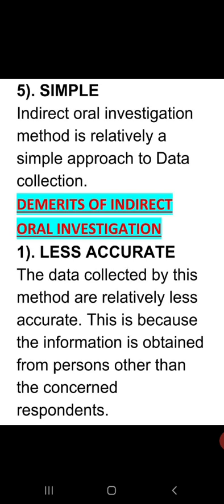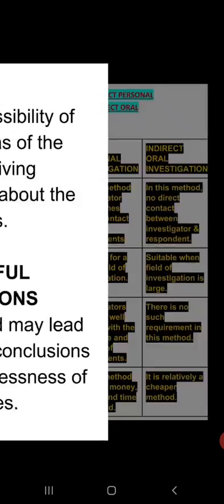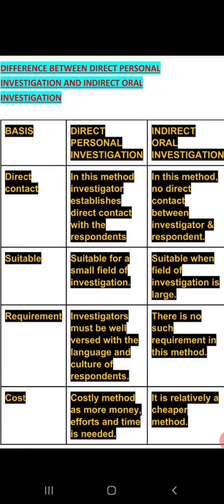Now, demerits of indirect oral investigation. Number one — it is less accurate. This method is relatively less accurate because the information is obtained from persons other than the concerned respondents. Number two — it is biased. There is a possibility of personal bias because if the witness is in opposition to the respondent, they may not give you pure information. Number three — doubtful conclusions. This method may lead to doubtful conclusions due to carelessness of the witnesses.